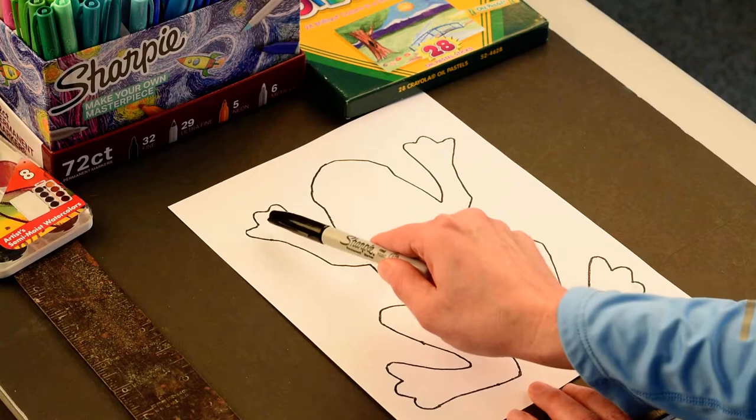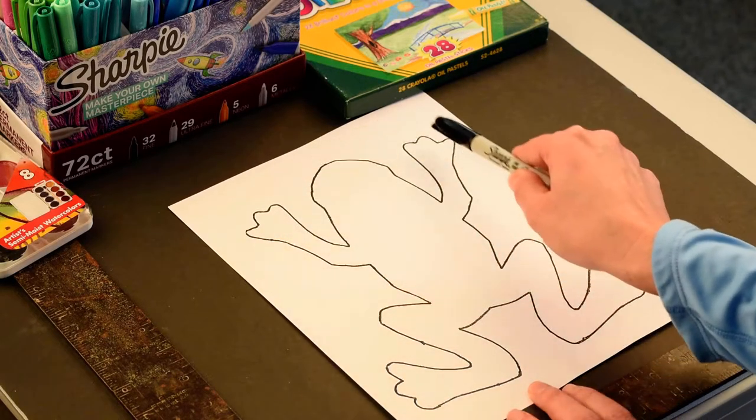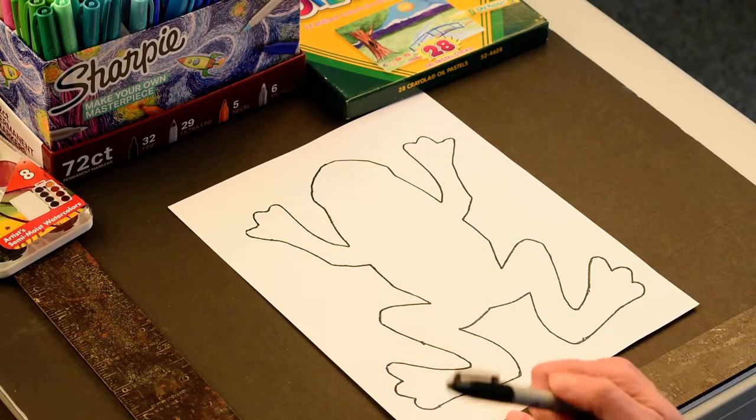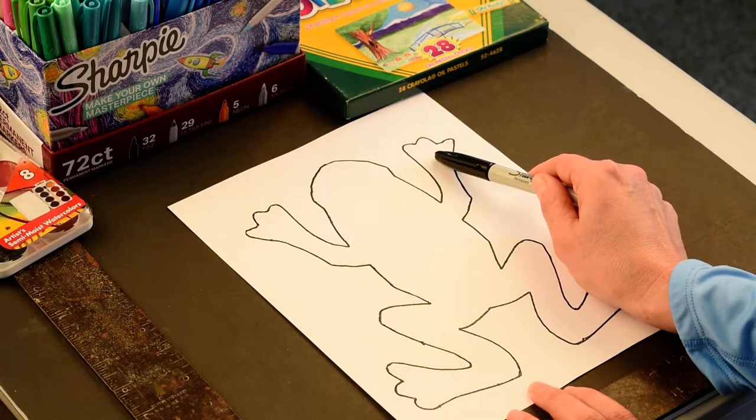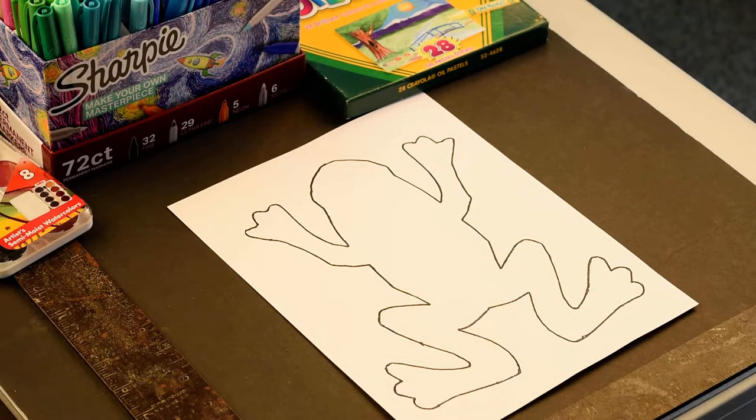Now if we look, we see there's some symmetry here, right? Like this leg looks like this leg here. So the goal is if you do something on this leg, you should do the exact same thing on this leg. So let me show you what I mean.